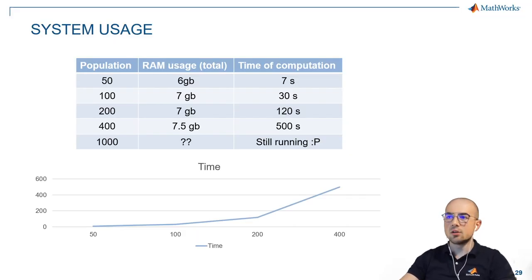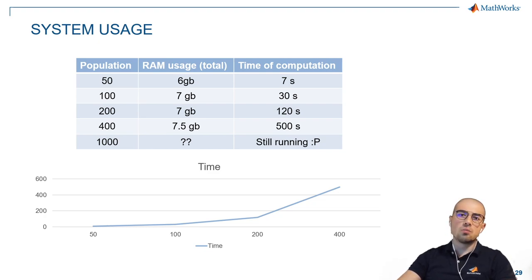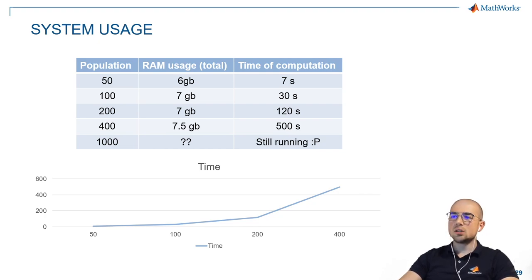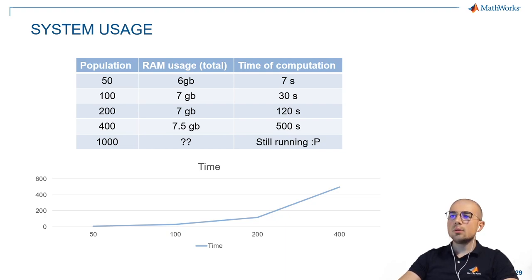The results I got from this simulator: starting with a population of 50, we use 6 GB of RAM and take 7 seconds to compute the simulation. Going to a population of 100 people, we get 7 GB of RAM and 30 seconds, and so on. As you can see, the time required to run the simulation is not linear. This means if you want to compute a very large simulation with a lot of people, it would take quite intensive RAM usage and a very long computation time.